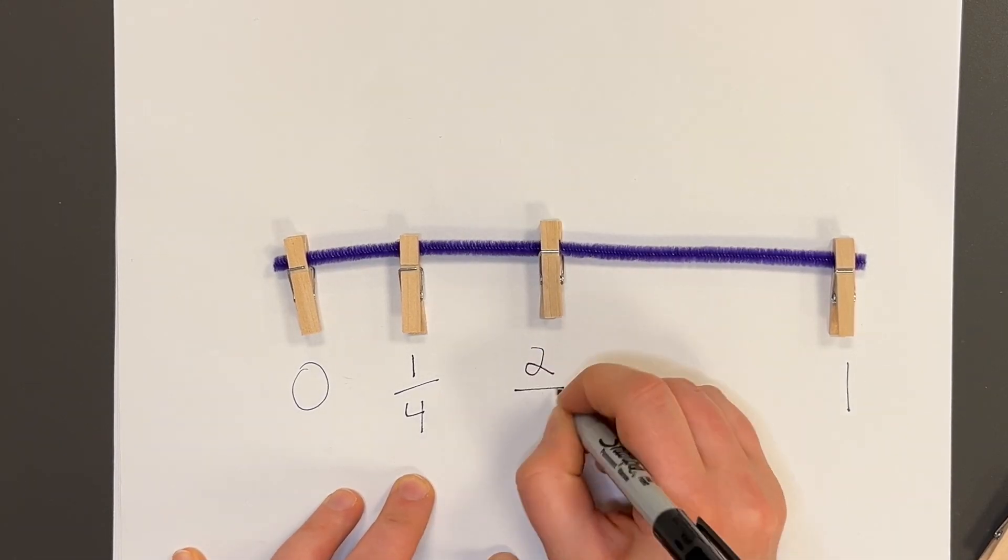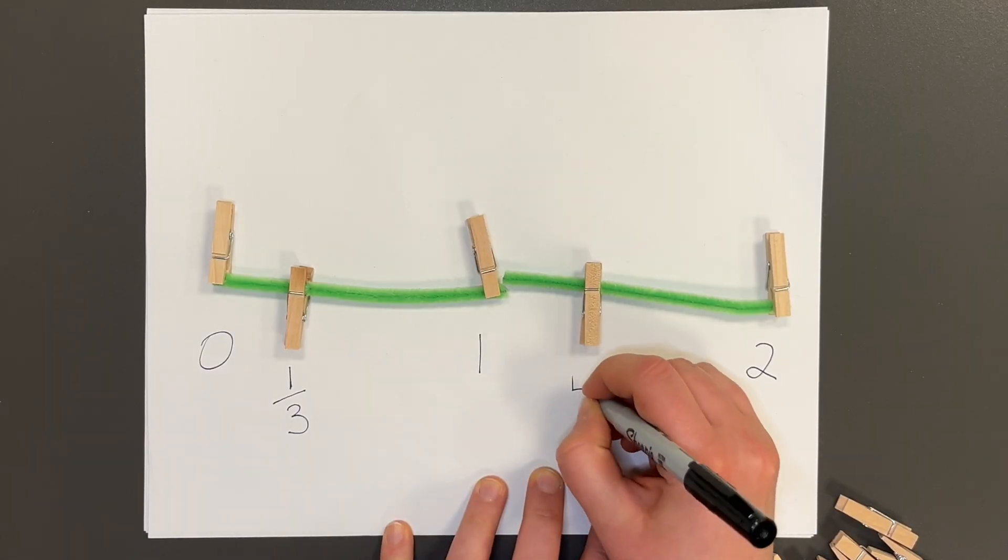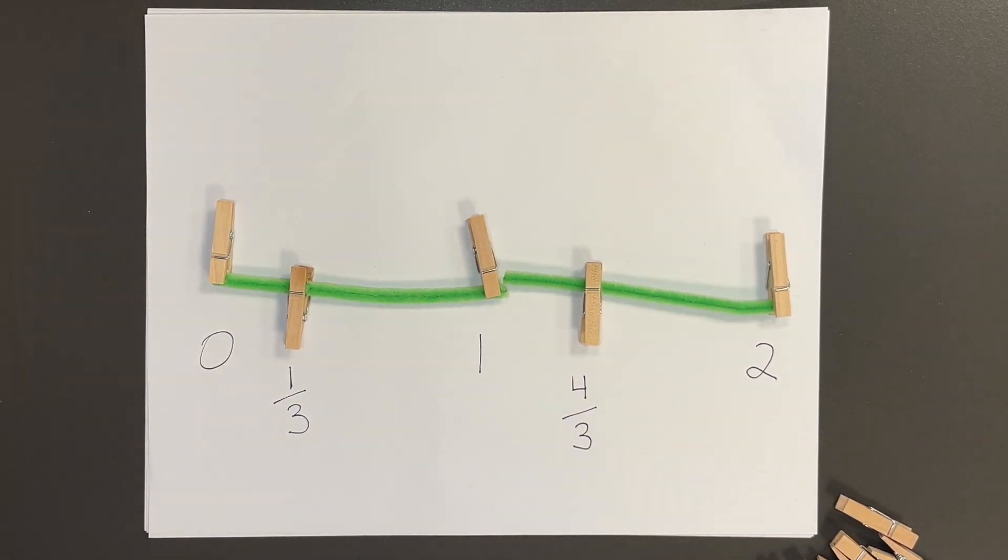Then have them label fourths, fifths, and they can even use two pipe cleaners and do improper fractions.